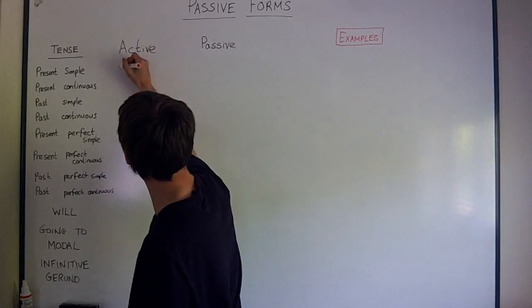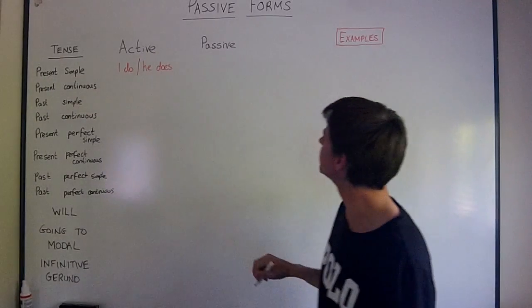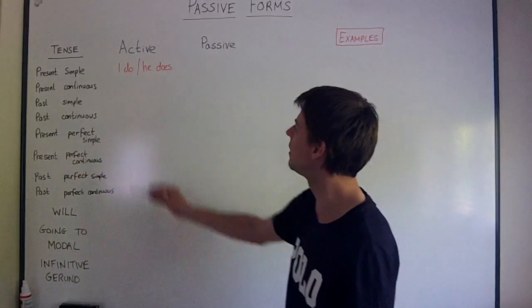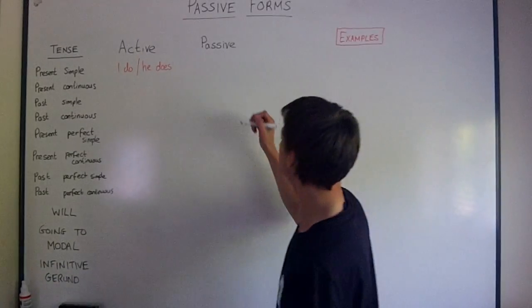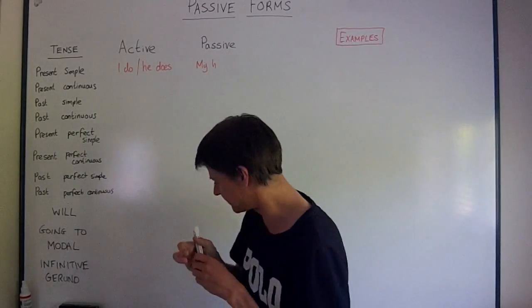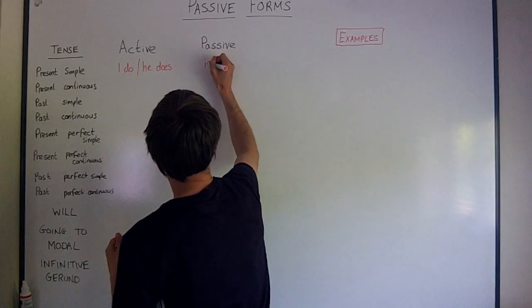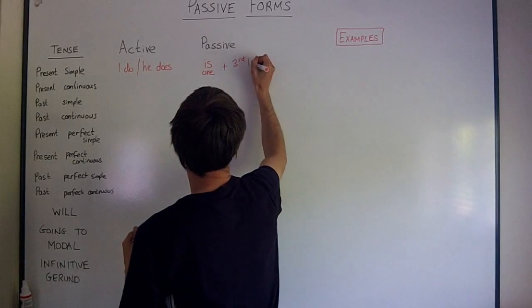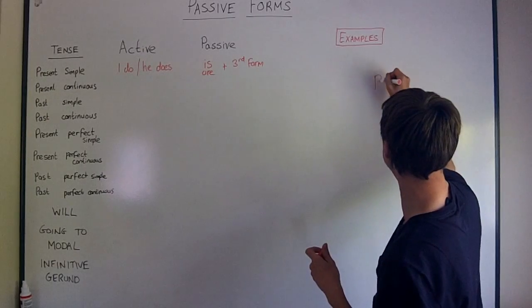So active for present simple is I do or he does. Remember, we use present simple for every day, every week, regular, repeated actions. I do my homework every Sunday. In passive, it would be my homework is done on Sundays. My homework is done. So perhaps let's make it a bit clearer. Is or are plus third form is done. My homework is done on Sundays by me. Please don't forget by.